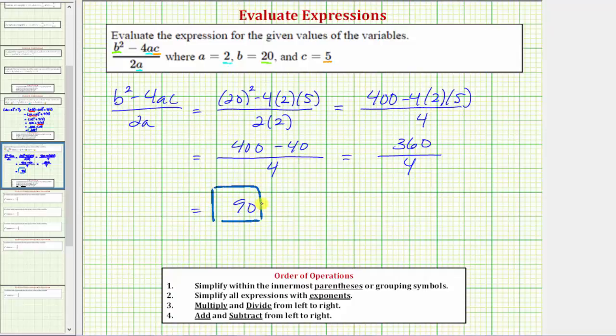So the expression, the quantity b squared minus 4ac divided by 2a equals 90 when a equals 2, b equals 20, and c equals 5.